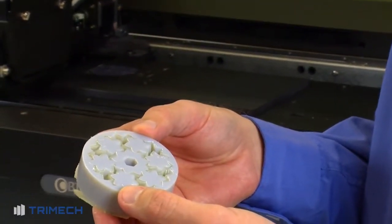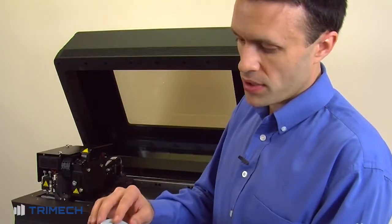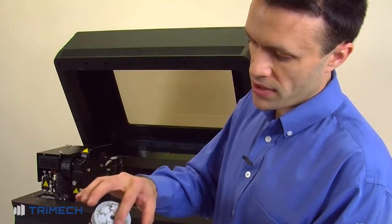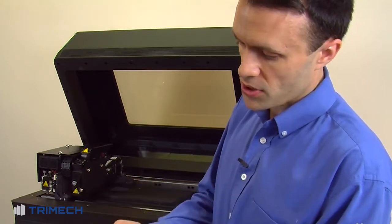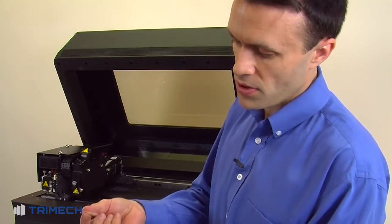You can see the part now that has come off the machine has bare material showing where there was no support needed, and then you can also see the support on the inside where it was needed. Also on the bottom you'll see the gel-like material that comes right off with your fingers, but we're also going to run this through a water jet to clean it completely.